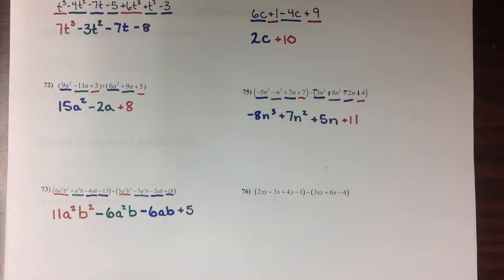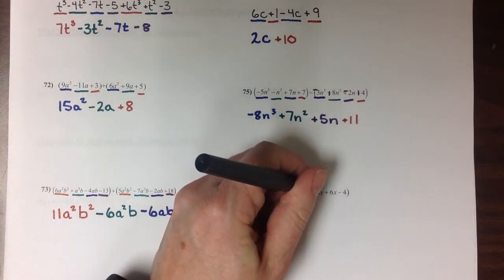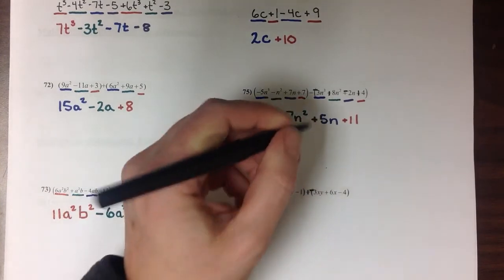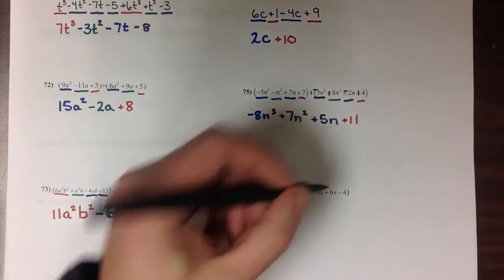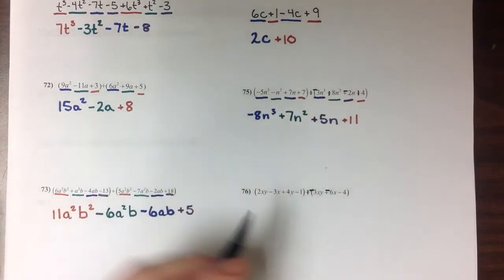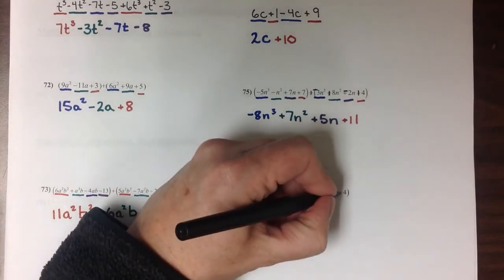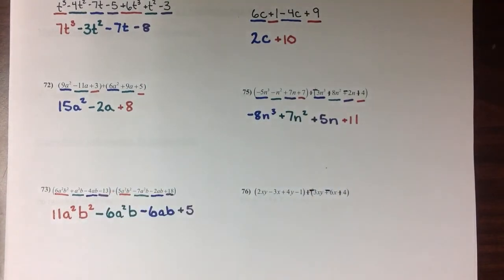One more example to look at here. We'll need to distribute that negative through first. So this is going to become a -3xy. That negative onto that positive makes that a -6x. And the negative onto the negative makes that a positive 4.